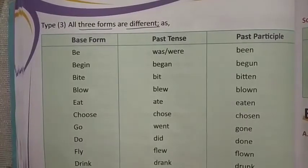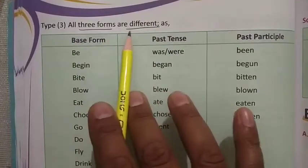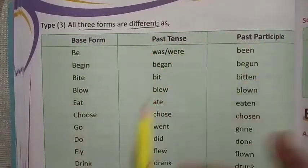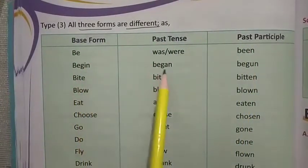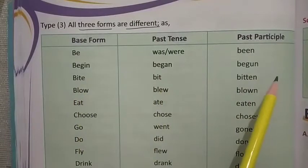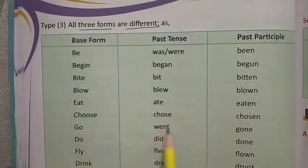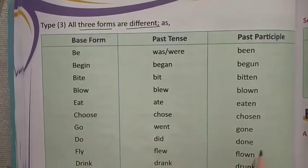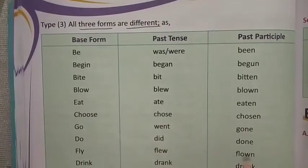Forms of verbs where all three forms are different: be, was/were, been; begin, began, begun; eat, ate, eaten; go, went, gone; do, did, done; fly, flew, flown; drink, drank, drunk.